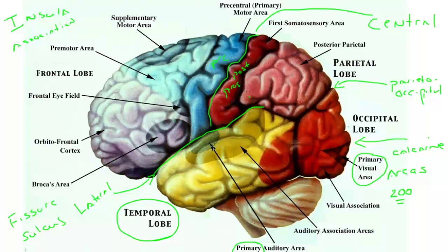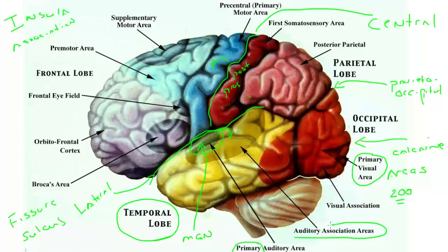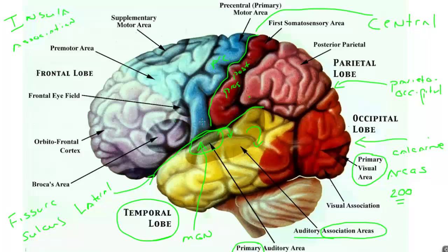Taking the auditory system as an example: the primary auditory area gets input from the medial geniculate nucleus, then sends axons to surrounding areas of auditory cortex. Those surrounding areas are called association areas because they get their auditory response from the primary auditory area. These then talk to even further removed areas of cortex. Most of human cortex, by this definition, is association cortex — rather than deriving its drive from the thalamus, these areas get their major drive from earlier areas of cerebral cortex. So the division goes: first into lobes, then gyri, and then within gyri are functionally distinct areas of cerebral cortex.